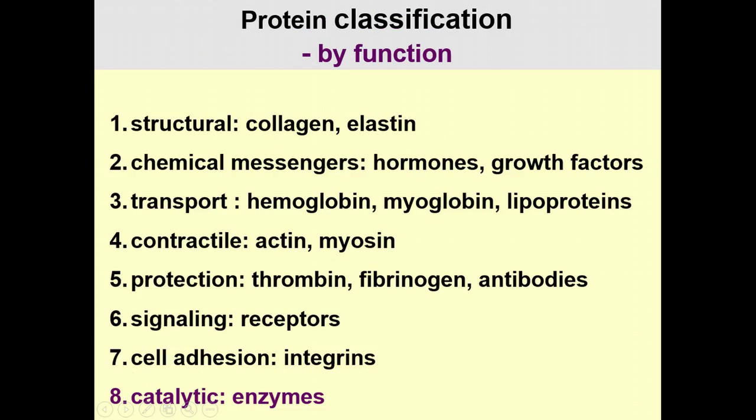The body has hundreds of thousands of different types of proteins, classifiable by function. Structural proteins like collagen and elastin support tissues. Chemical messengers include hormones and growth factors. Hemoglobin transports oxygen. Contractile proteins enable muscle contraction. Protective proteins like antibodies defend against pathogens. There are also cell signaling proteins, cell adhesion proteins, and finally catalytic proteins called enzymes.